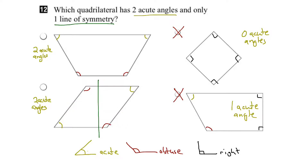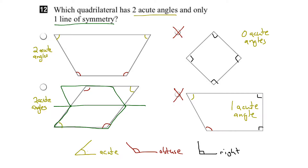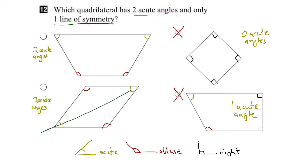Let's try horizontal lines of symmetry. If I draw a horizontal line about halfway through and flip this side over, I'd end up with something that doesn't match up, so it's not a line of symmetry. Let's try a diagonal line of symmetry. If I draw a line through here and flip this shape over it, it matches up pretty closely, so it is a line of symmetry. This holds true as long as all sides are the same length — so it's a rhombus.